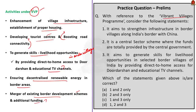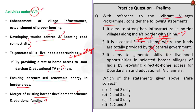Now let us approach the Vibrant Villages Program question. Statement 1: It aims to strengthen infrastructure in border villages along India's border with China — this is correct; it is the foremost objective of the program. Statement 2: It is a central sector scheme where funds are totally provided by the central government — this is incorrect, because the Vibrant Villages Program is a centrally sponsored scheme and funds are shared between center and states. Statement 3: It aims to generate skills for livelihood opportunities by providing direct-to-home access for Doordarshan and educational television channels — this is correct. The correct answer is option C, 1 and 3 only.